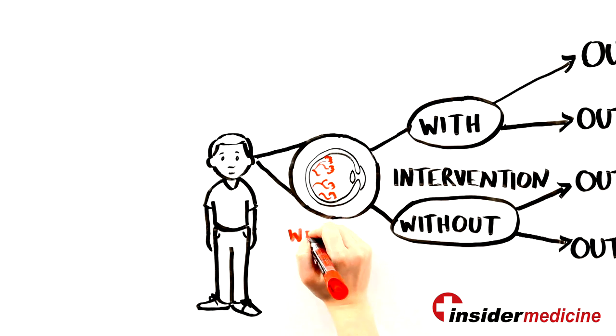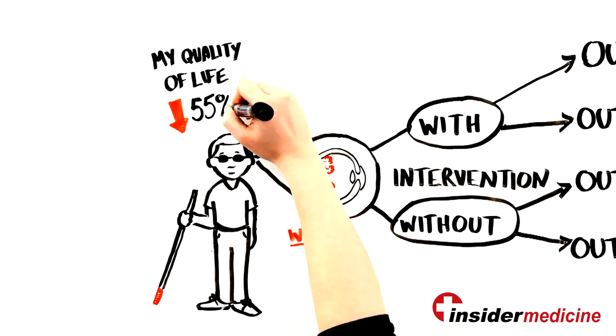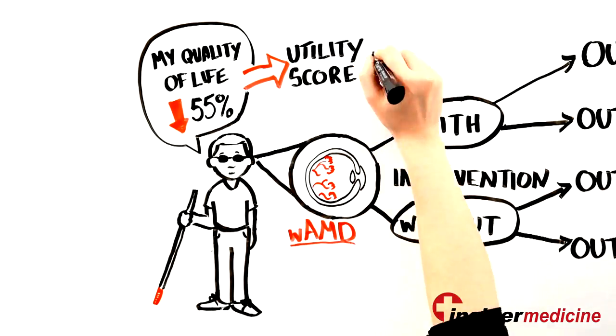For example, someone with wet macular degeneration might say that if they went blind, their quality of life would decrease by 55%. This would mean a utility score of 0.45.